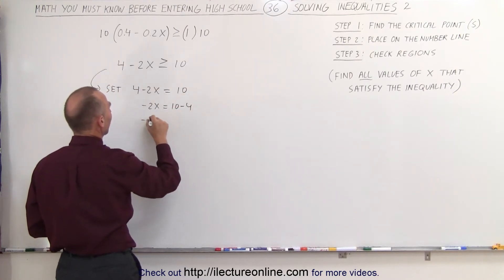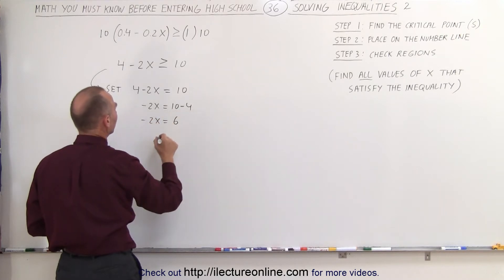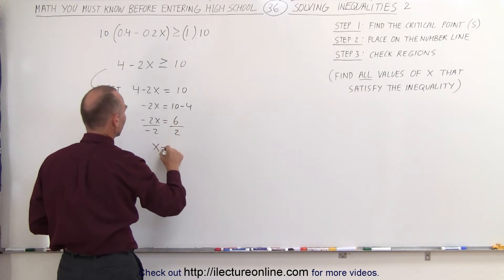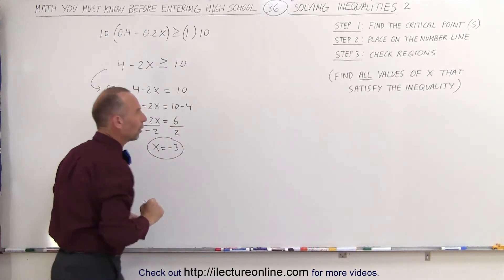Minus 2x is equal to 6, and divide both sides by negative 2. We get x is equal to negative 3. This is the critical point.